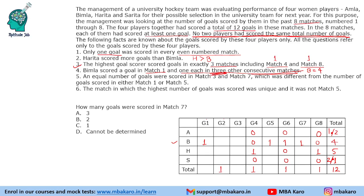An equal number of goals were scored in match 3 and match 7, let's call it A each, which was different from the number of goals scored in either match 1 or match 5. The match with the highest number of goals was unique and it was not match 5. Since match 3 and 7 have the same number of goals, and the even-numbered matches already have only 1 goal, the highest number of goals must be in match 1.